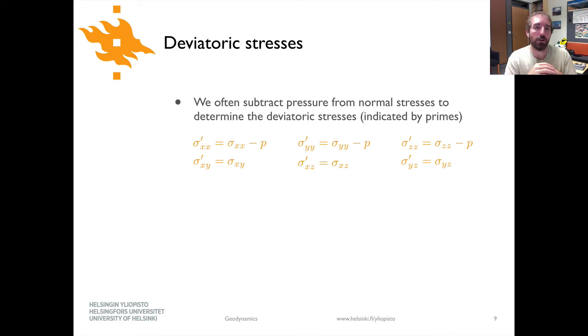Alright, so there's one last thing we're going to talk about in this lecture and that is the deviatoric stress. And it's something of a term that can get confused sometimes with things like differential stresses which we'll see later on in the course. But deviatoric stress is simply the stress that you calculate when you subtract pressure from the three normal stresses. So if you take sigma xx minus P, sigma yy minus P, sigma zz minus P, that will give you the deviatoric stress.